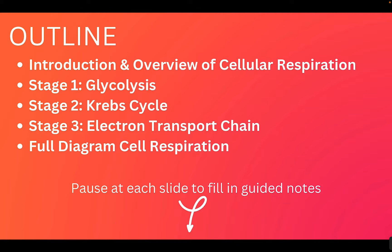For today's notes in our outline, I'm going to do a brief introduction and overview of the process of cellular respiration with a focus on two substances that we see in cellular respiration. Then I'm going to go through the three stages: glycolysis, Krebs cycle, and the electron transport chain. At the end, I will have a full diagram to review all of those stages at the same time. With each slide, you can pause and fill out the guided notes found in the description below, or you can watch the video straight through.